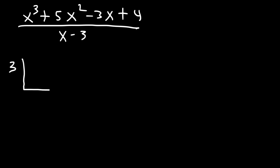Now, let's try one more example. So let's divide x cubed plus 5x squared minus 3x plus 4, and we're going to divide that by x minus 3. So feel free to pause the video and work on it. By the way, for those of you who want more problems on synthetic division, or for those of you who want to do long division, check out the description section below. I'm going to post some more videos on those topics. Now, the first thing we need to do is put a 3 out based on the x minus 3 term. And then let's write the coefficients: 1, 5, negative 3, and 4.